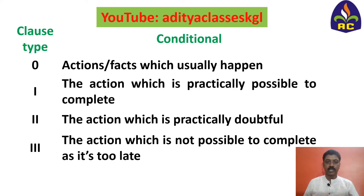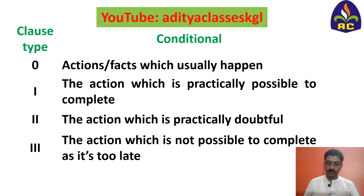Zero conditional explains about the actions or facts which usually happen. First conditional explains about the action which is practically possible to complete. Second conditional explains about the action which is practically doubtful. And the third conditional explains about the action which is not possible to complete, as it is too late to take the action.